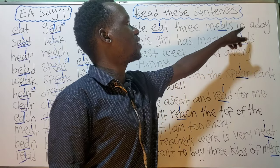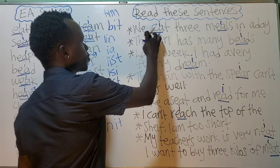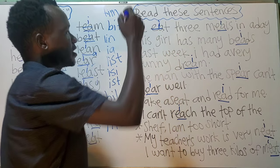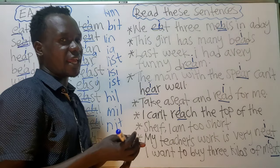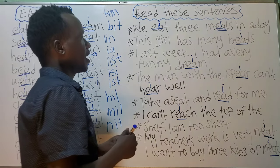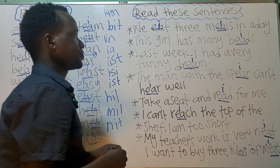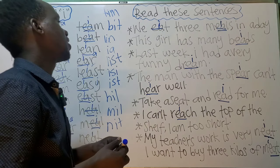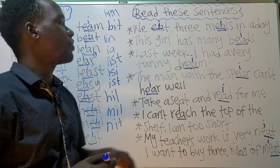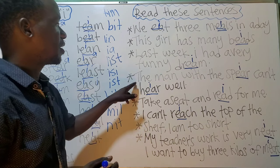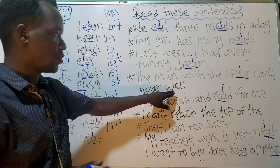Let us read: 'We eat three meals in a day.' You cancel the EA and put the E sound — three meals in a day, meaning you eat three times a day. Next: 'This girl has many beads.' And then: 'Last week I had a very funny dream.'